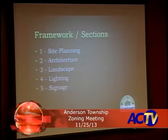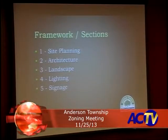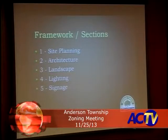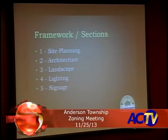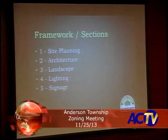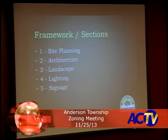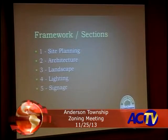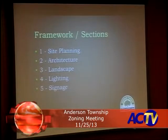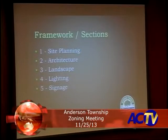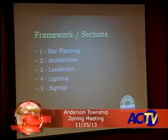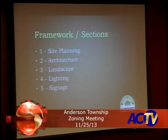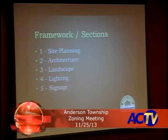There are five sections addressed in the design guidelines: site planning, architecture, landscaping, lighting, and signage. The guidelines speak to looking at surrounding development. So if a proposed site on Beachmont Avenue were to come before this zoning commission, the idea is to look at surrounding development and adopted plans such as the Beachmont corridor and vision plan, or if in the Ohio Riverfront area, recommendations from those plans. It gives the zoning commission and other approving bodies a guideline of whether a proposal is within the recommendations of those adopted plans.